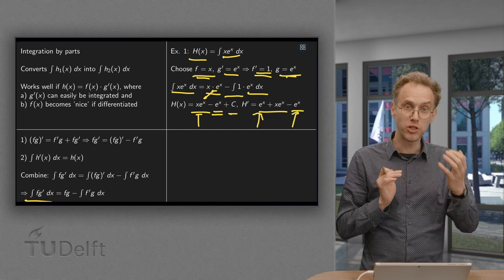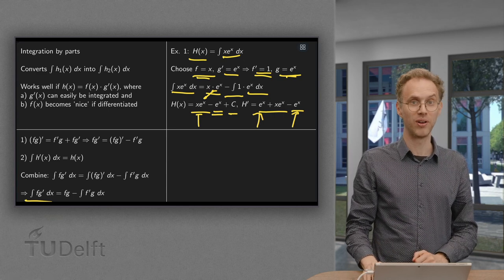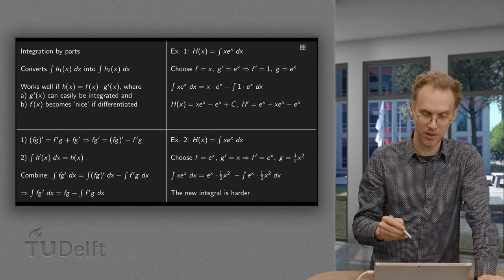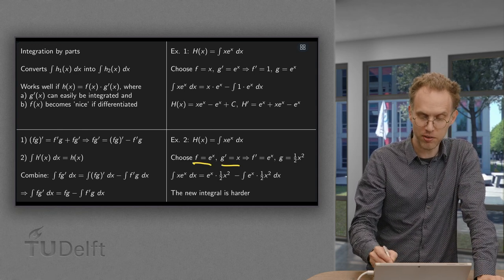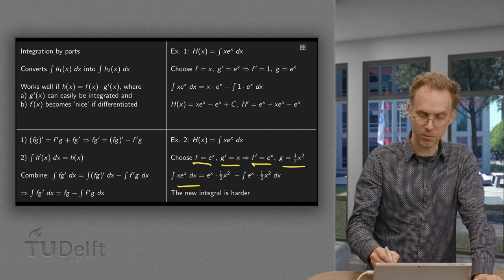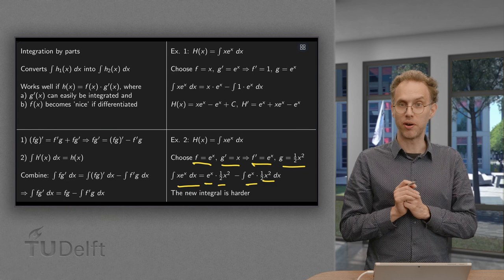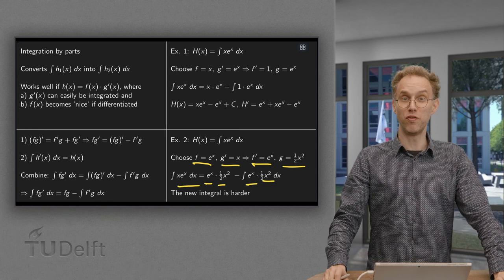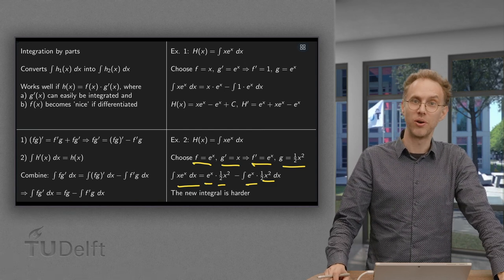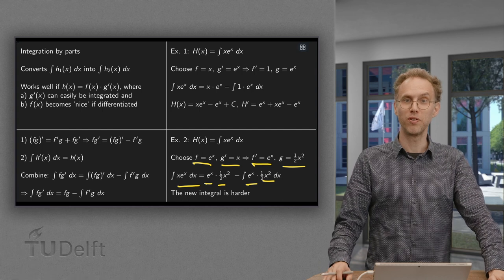We made a choice here — we chose our f and our g prime. What if we had made the choice the other way? Let's try the wrong way. We choose f equals e to the power x and g prime equals x. Then f prime is still e to the power x and g equals one half x squared. Applying the rule, the integral becomes f times g minus the integral of f prime times g, giving a new integral of e to the power x times one half x squared. But this new integral is actually worse than the original one. The application of the rule is correct, however it didn't get us anywhere because the new integral is harder. When you make such a wrong choice, you will notice it fast enough because your new integral will become really ugly.